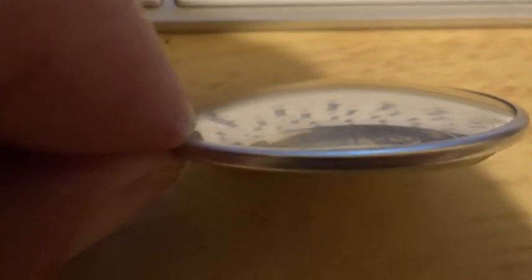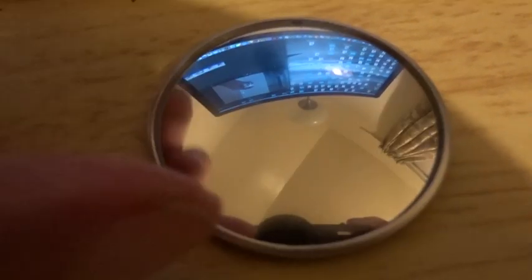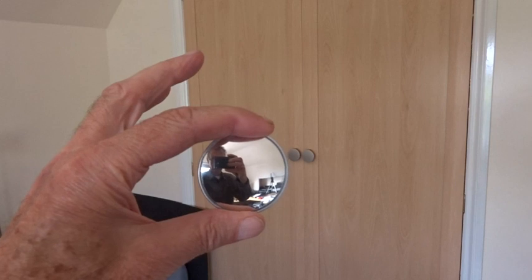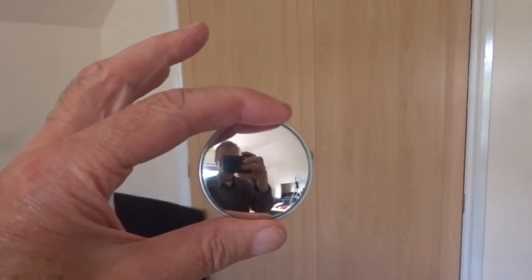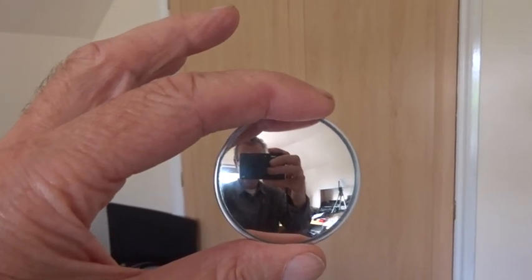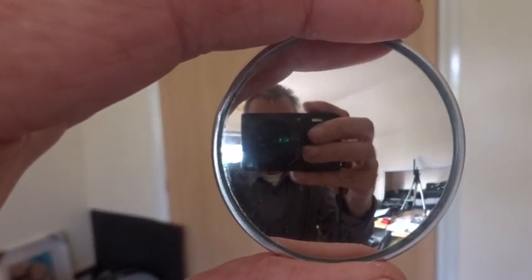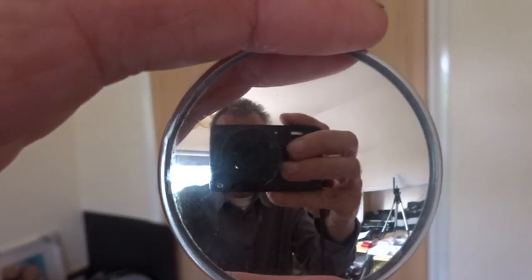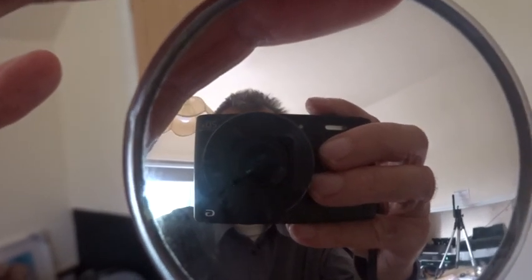As you can see, the center of a convex mirror bulges outwards. When we look into it, we can see a wide field of view all around. The image we see looks as if it's behind the mirror. If it's behind the mirror, it can't really be behind the mirror, so it must be a virtual image—an image that is not really exactly where it seems to be.